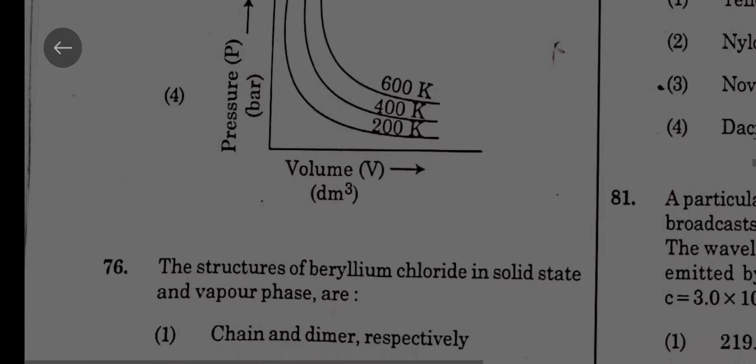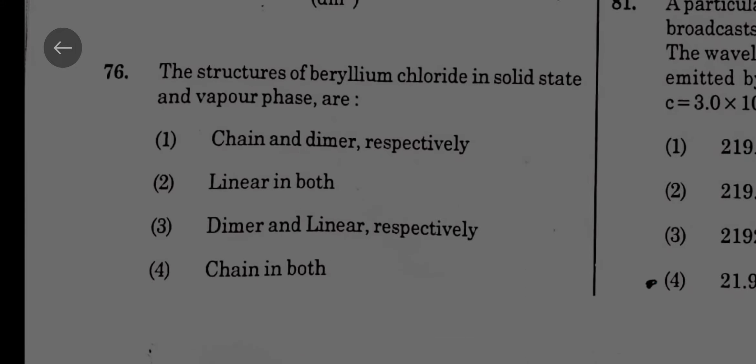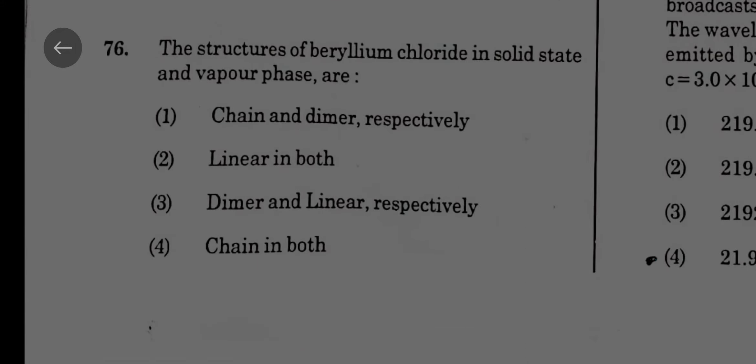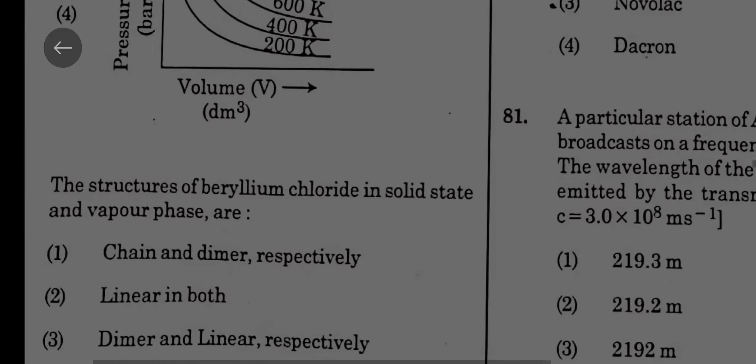The structure of beryllium chloride in solid state and in vapor state is: beryllium chloride will be chain in solid state and in the vapor state will be dimer, and above a certain temperature will be a linear molecule. Chain and dimer, correct option from NCERT.